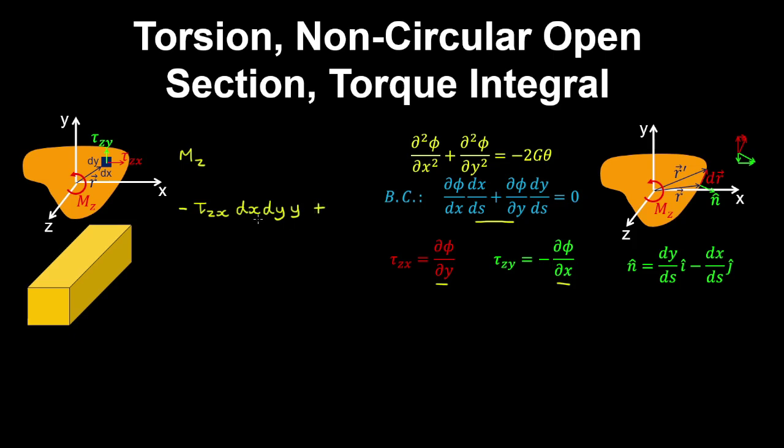Similarly, we have the torque due to the stress tau_zy. We multiply this by dx dy to get the force, and then multiply by the horizontal distance from the centroid, which is the moment arm.